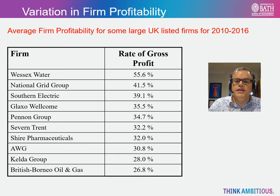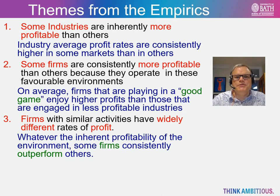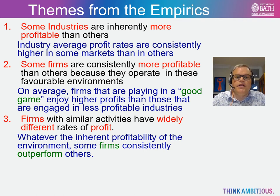In water, for example, it is the case that the industry is regulated and local water boards are required to invest in new infrastructure. They also have environmental responsibilities, for instance, being required to clean up beaches and sewage systems. These costs impact upon different water boards in many different ways and hence will affect their profitability. We can summarise some of these themes: some industries are inherently more profitable than others due to the nature of the industry and market structure. Some firms are consistently more profitable because they operate in favourable environments. And finally, firms with similar activities can have widely different rates of profit, which may reflect the fact they're better managed and may have a better strategy.